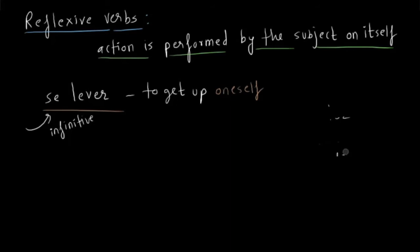It's like you are on bed and you move your body. Get up your body from the bed on the floor. That is why it reflects you because the action is performed by the subject on itself. So now let's look at the present tense conjugations. Present tense conjugation for this se lever.